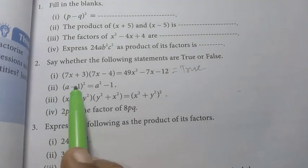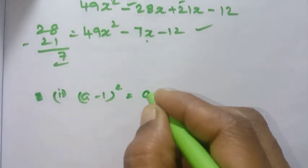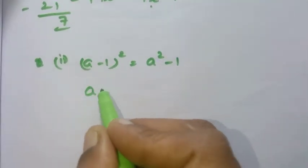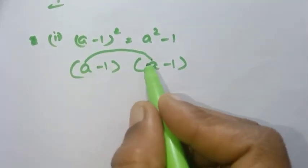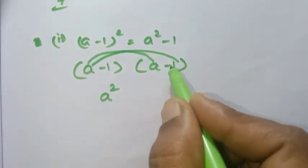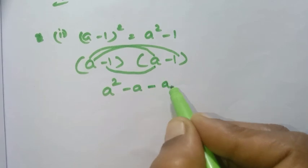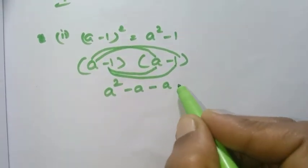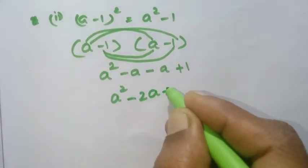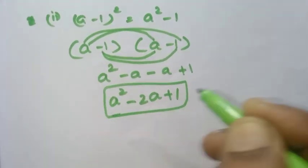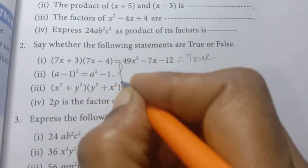Second true or false: is a minus 1 the whole square equal to a squared minus 1? We expand a minus 1 into a minus 1: a into a is a squared, a into minus 1 is minus a, minus 1 into a is minus a, minus 1 into minus 1 is plus 1. So the answer is a squared minus 2a plus 1, not a squared minus 1. The statement is false.